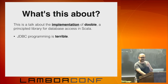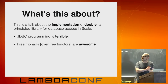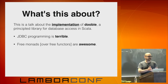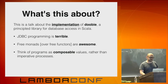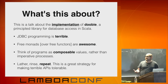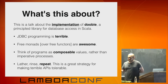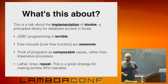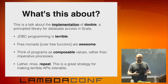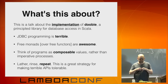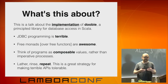The takeaways really are that free monads over free functors are really cool, and I'm going to explain what that means. We can think of programs as composable values, and this technique is something that you can apply generally. You can use it to make terrible APIs tolerable and turn something awful into something that you can use to build up programs that you can reason about.